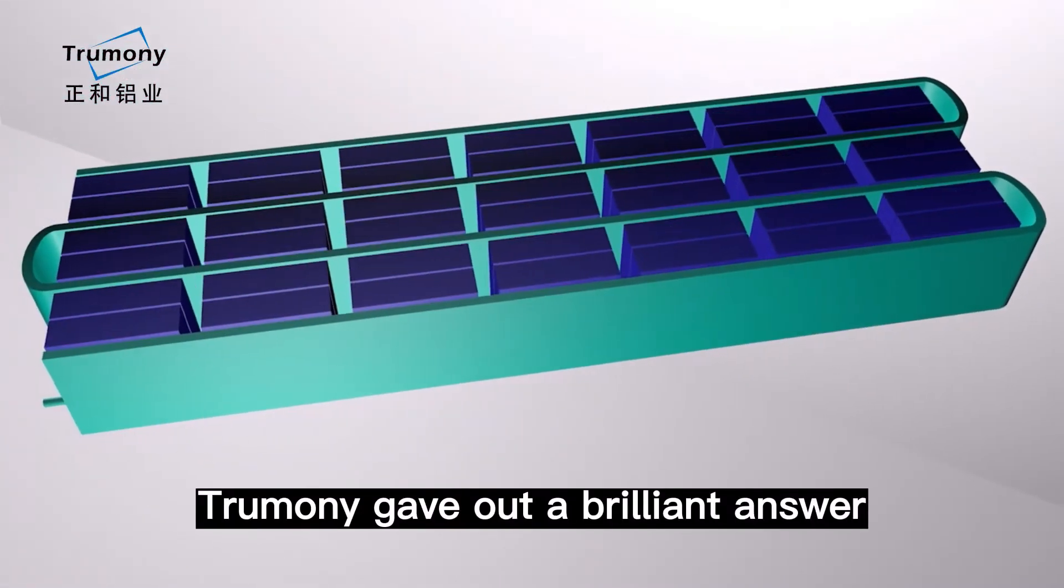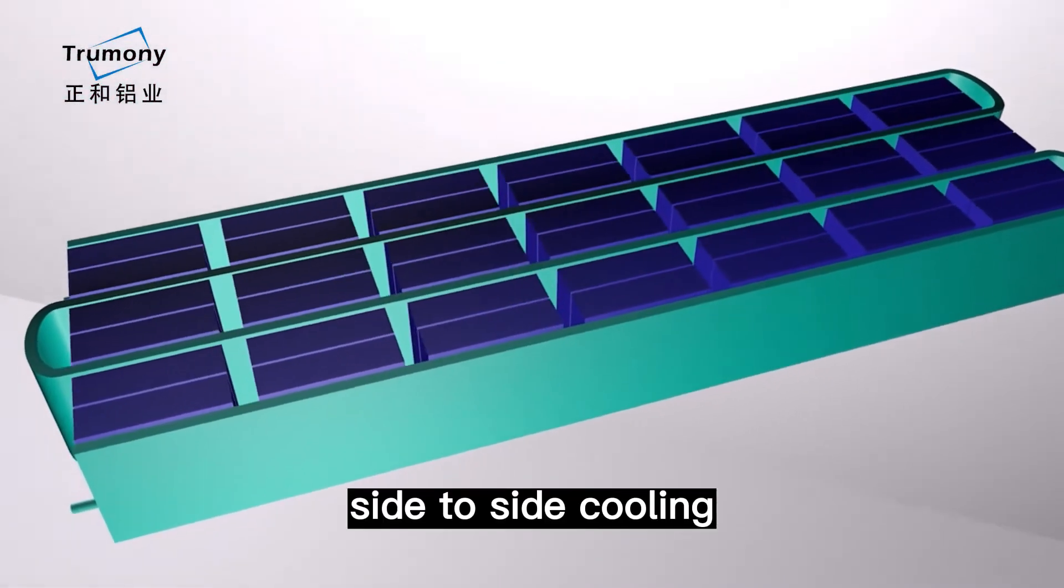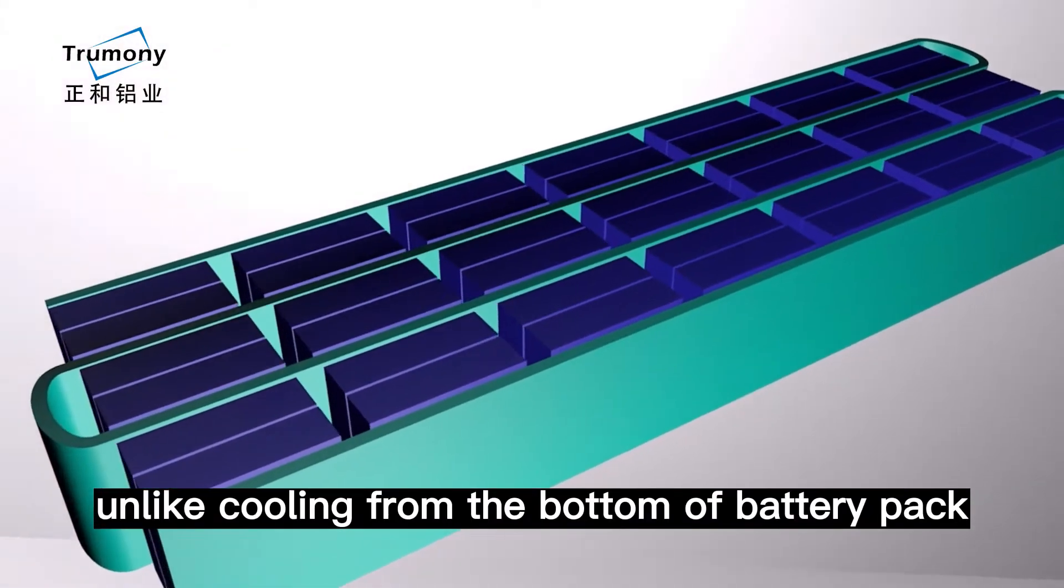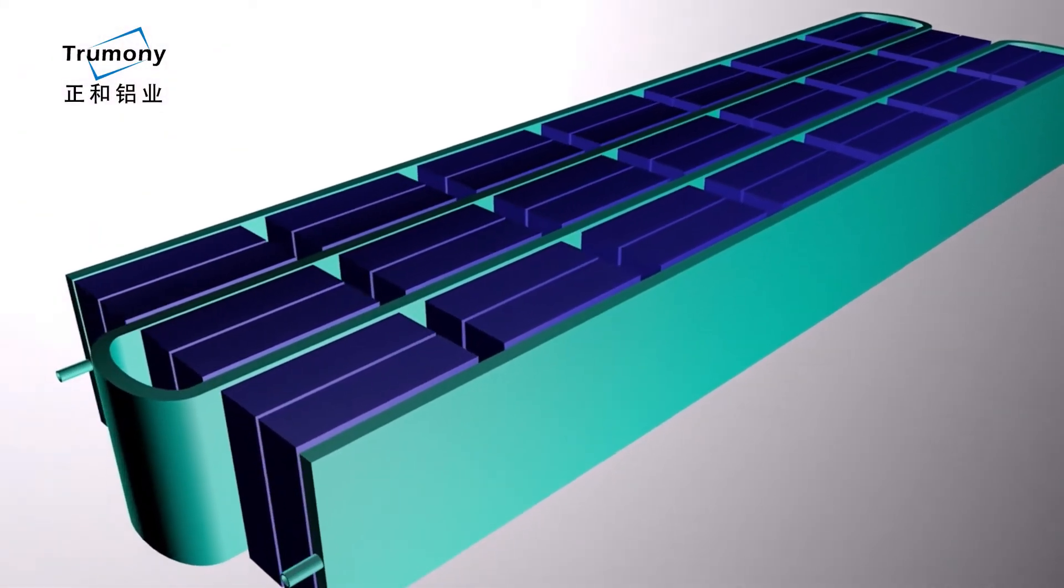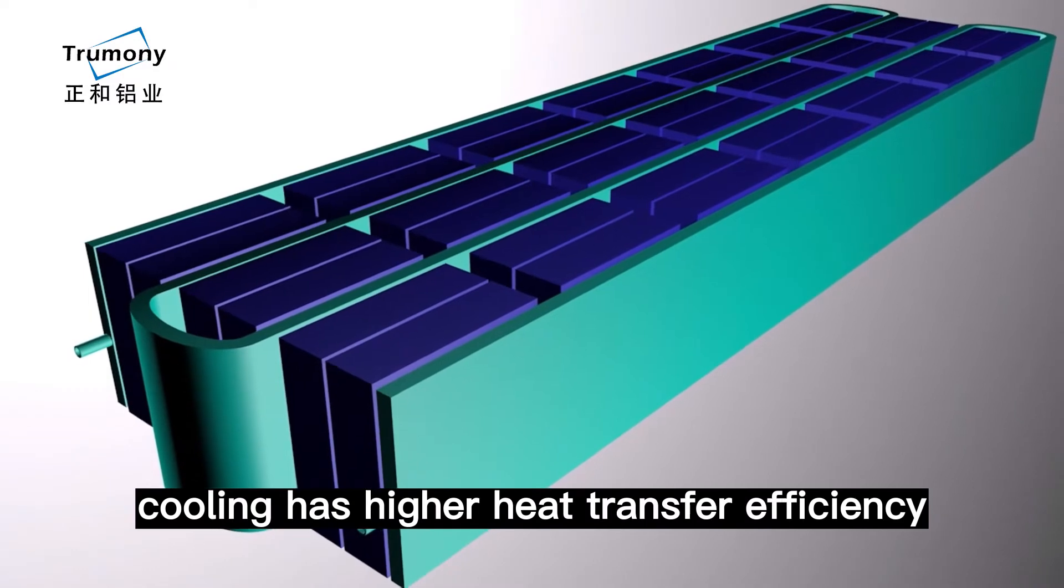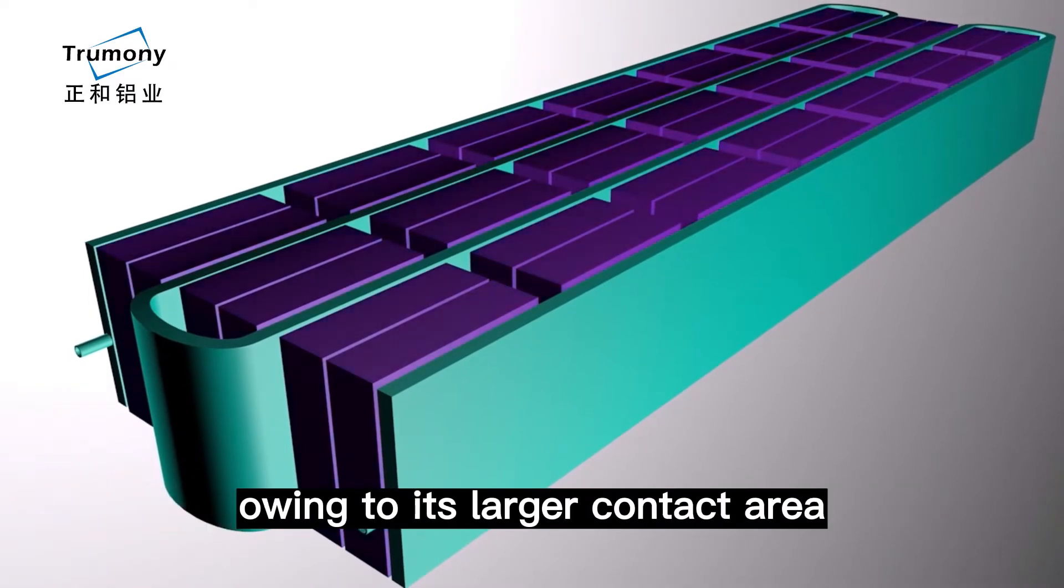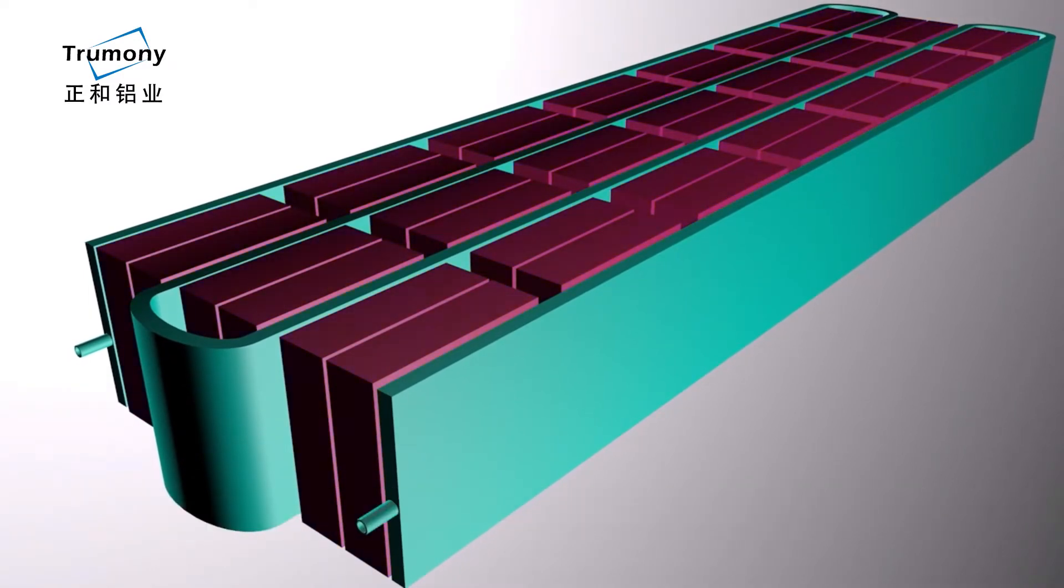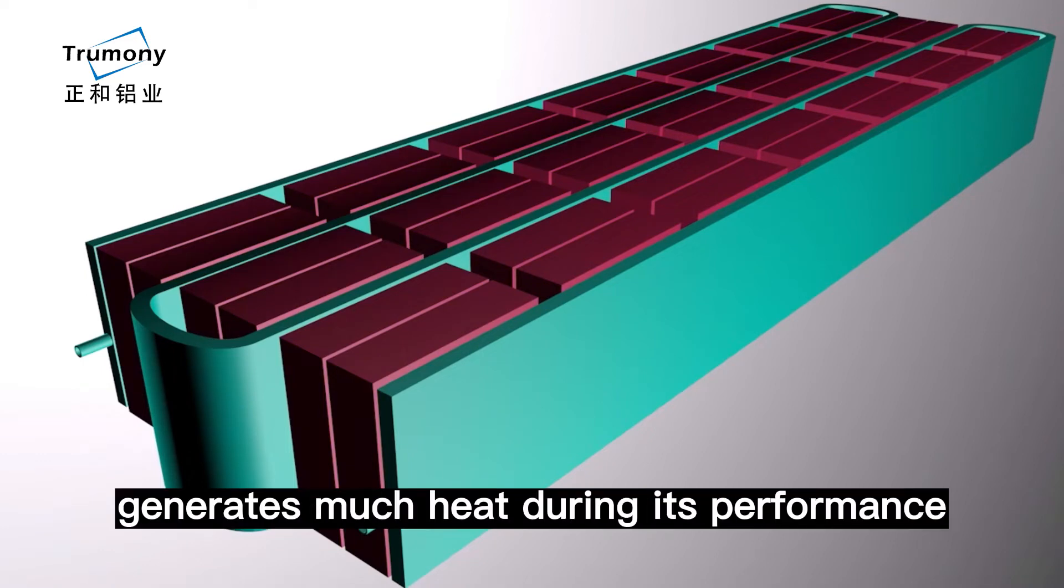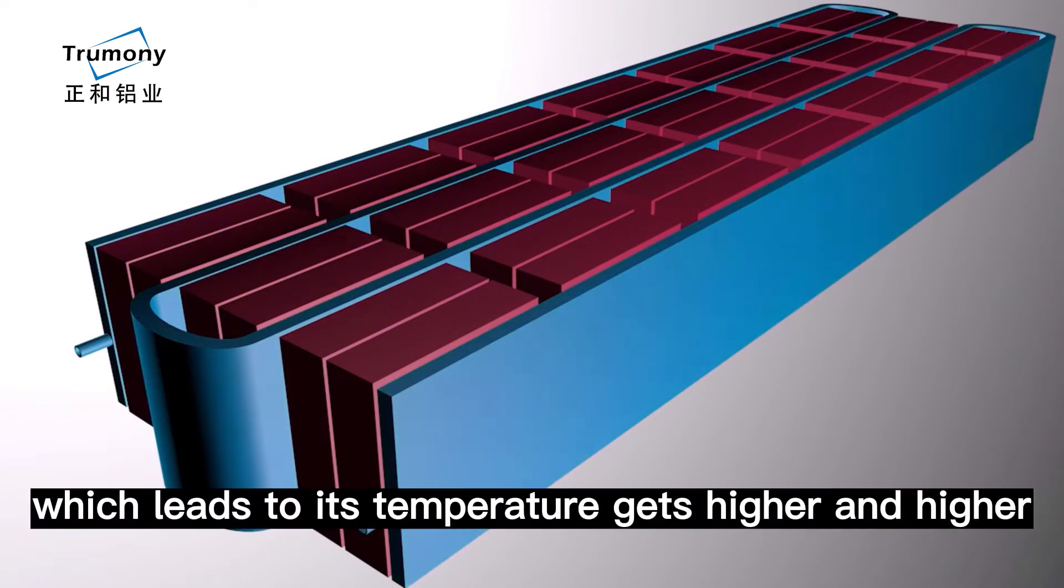Trumony gave out a brilliant answer: side-to-side cooling. Unlike cooling from the bottom of battery pack, side-to-side cooling has higher heat transfer efficiency owing to its larger contact area. The battery usually generates much heat during its performance, which leads to its temperature getting higher and higher.